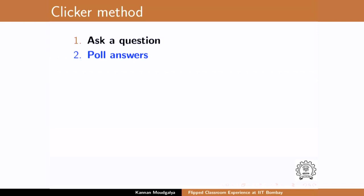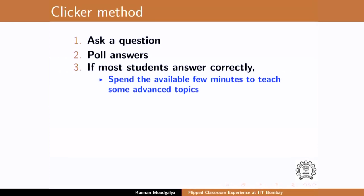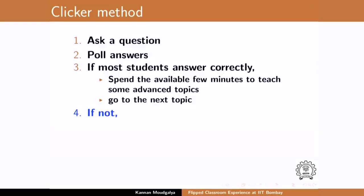So, what is the method? Ask a question, poll the answers, find out how many people answered A, how many answered B, and so on. If most students answer correctly, then go to the next topic. Spend the available few minutes to teach some advanced topics — you can always keep an extra 1 or 2 minutes for that topic in case students do not understand. But if people have understood, you can spend that time teaching some advanced concepts. If not — and this happened half the time — half the time students had not understood.